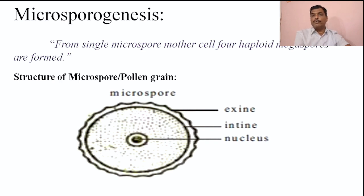Through the germ pore, the pollen grain germinates at the time of germination. Inside these two layers, dense cytoplasm with a single nucleus is present. So the pollen grain is a unicellular, uninucleate, haploid structure present in plants.